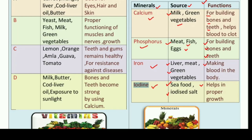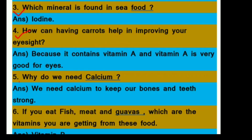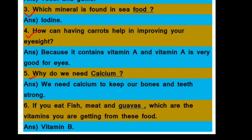So now let's move on to our question and answer section. First question: name the vitamin required for making bones and teeth strong — that is vitamin D. Second, fill in the blanks: vitamin C helps in keeping our teeth and gums healthy. Third: which mineral is found in seafood? Iodine. Fourth: how can having carrots help in improving your eyesight? Because carrots contain vitamin A, and vitamin A is very good for eyes and eyesight. Fifth: why do we need calcium? We need calcium to keep our bones and teeth strong. Sixth: if you eat fish, meat, and guava, which vitamins are you getting? That is vitamin A and vitamin C.